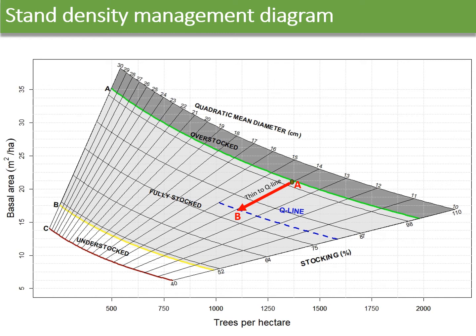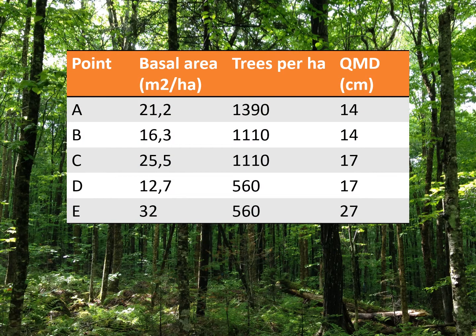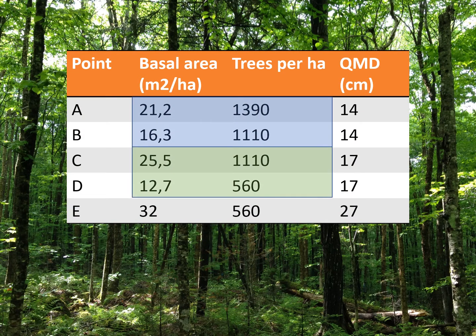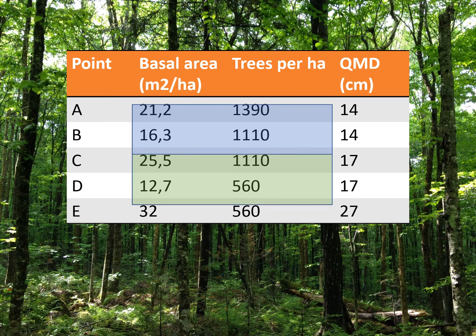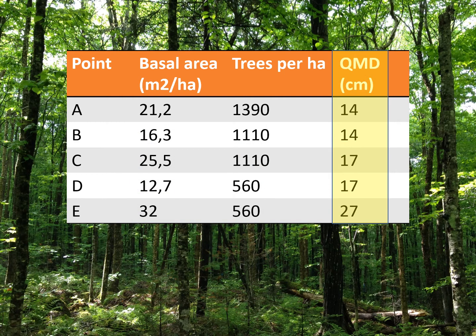Coming back to our stand — with time, the stand will develop towards point C. Then the stand can be thinned again to point D. The stand will then develop towards point E. The stand values at the different points in the graph are provided in this table. We see that the basal area is reduced with thinnings but increases between thinnings as the trees grow. The quadratic mean diameter will also increase as the crop trees become larger.